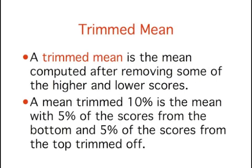The third measure of central tendency we'll discuss in this section is the trimmed mean. The trimmed mean is computed by removing a specified proportion of scores from the top and bottom of the distribution and computing the mean of the remaining scores. As a result, the trimmed mean is less influenced by extreme scores than is the arithmetic mean.